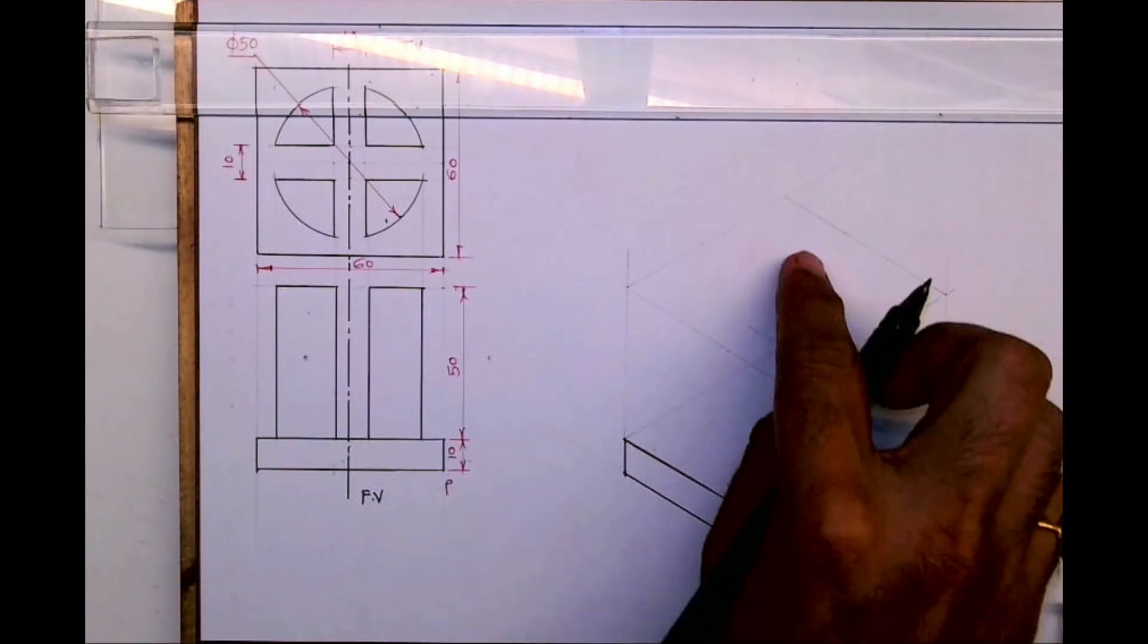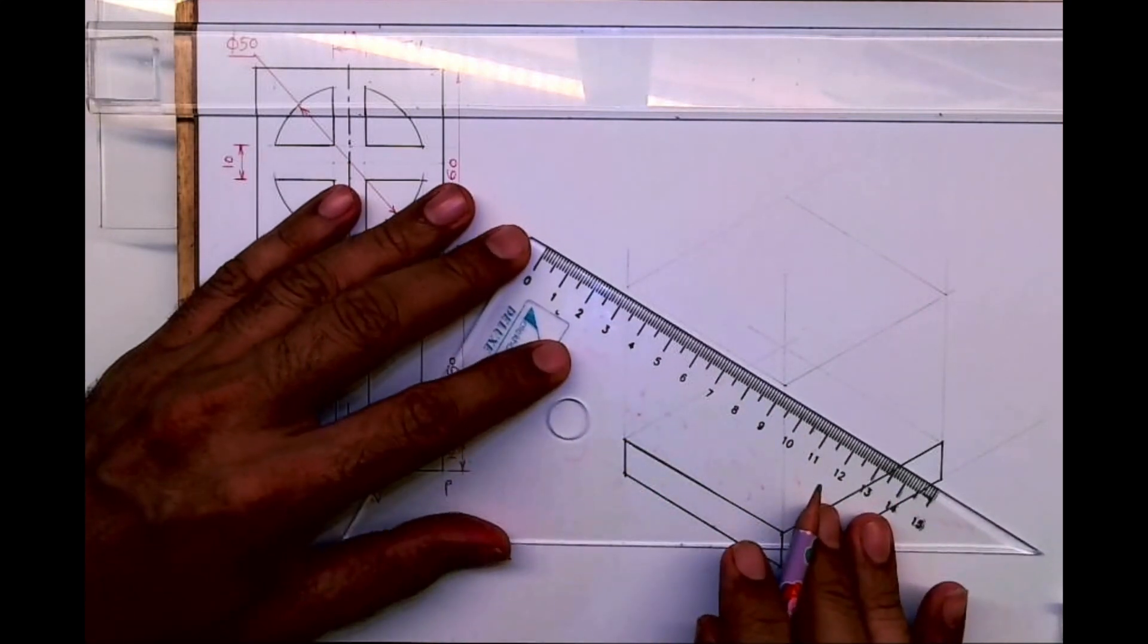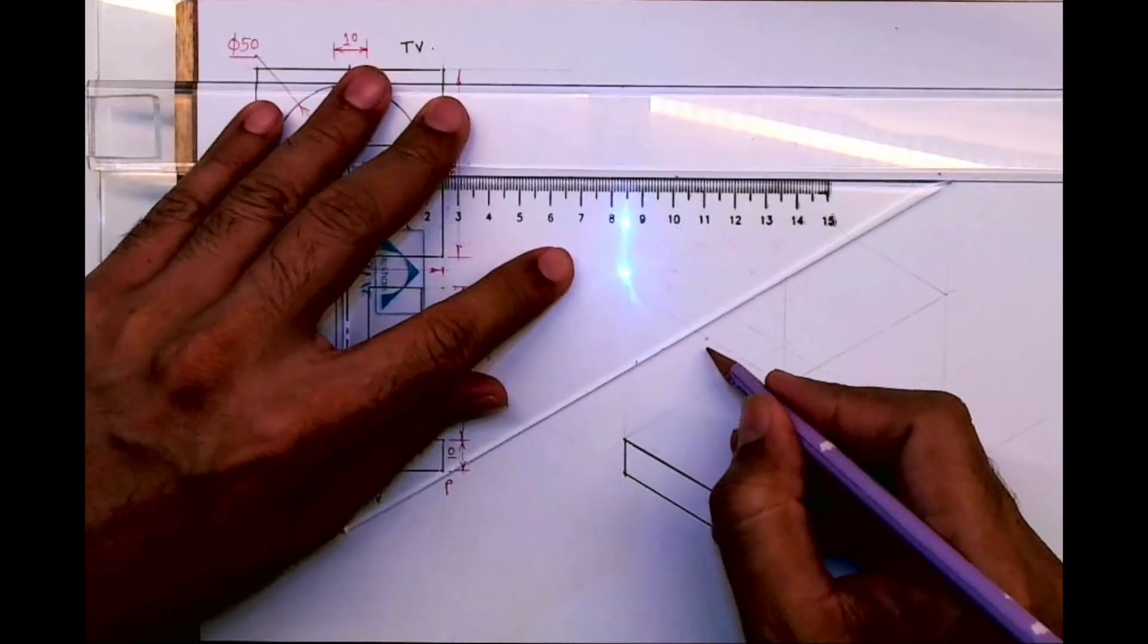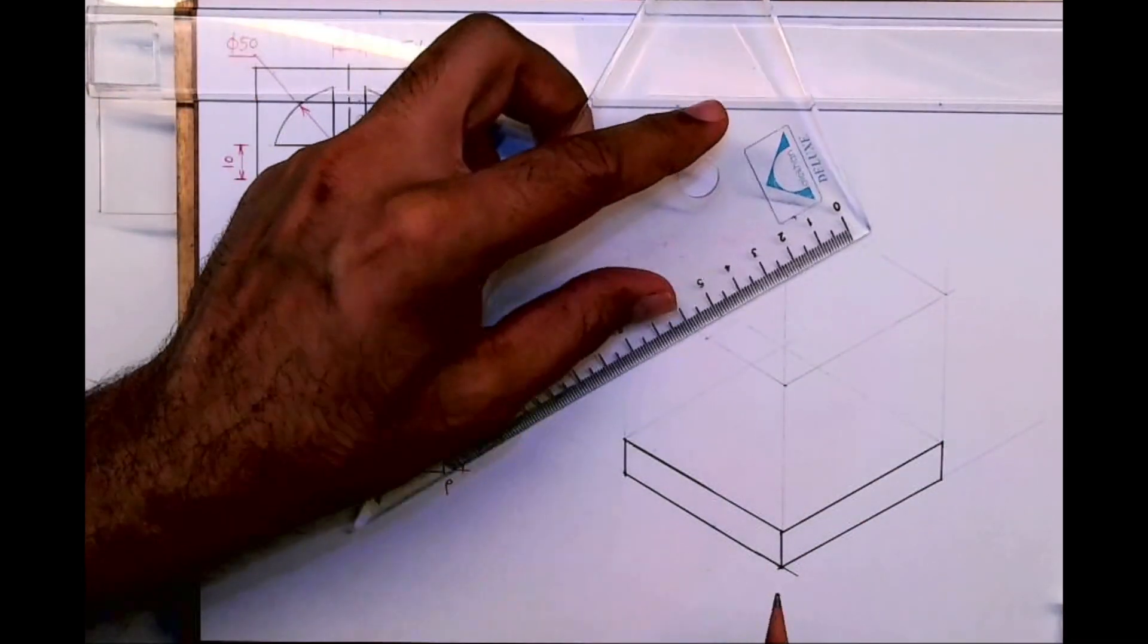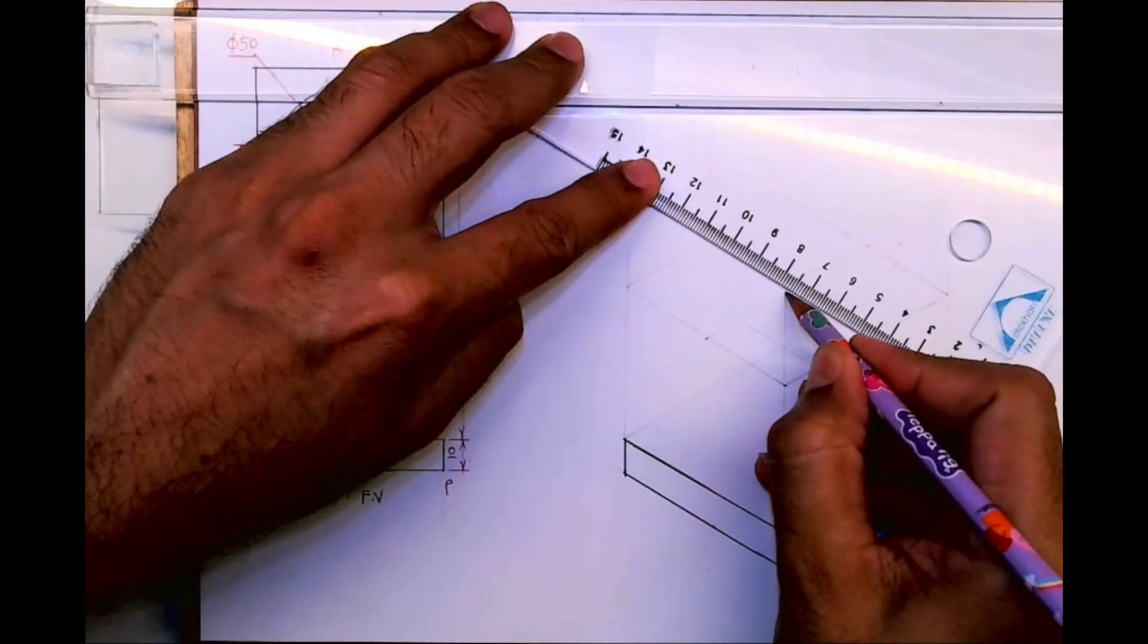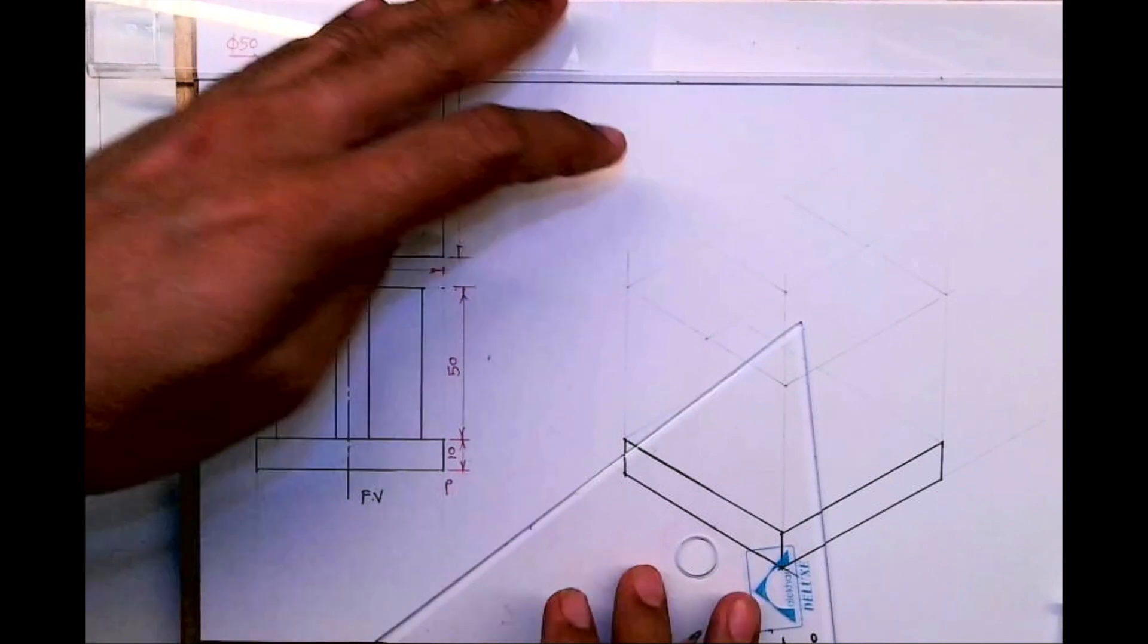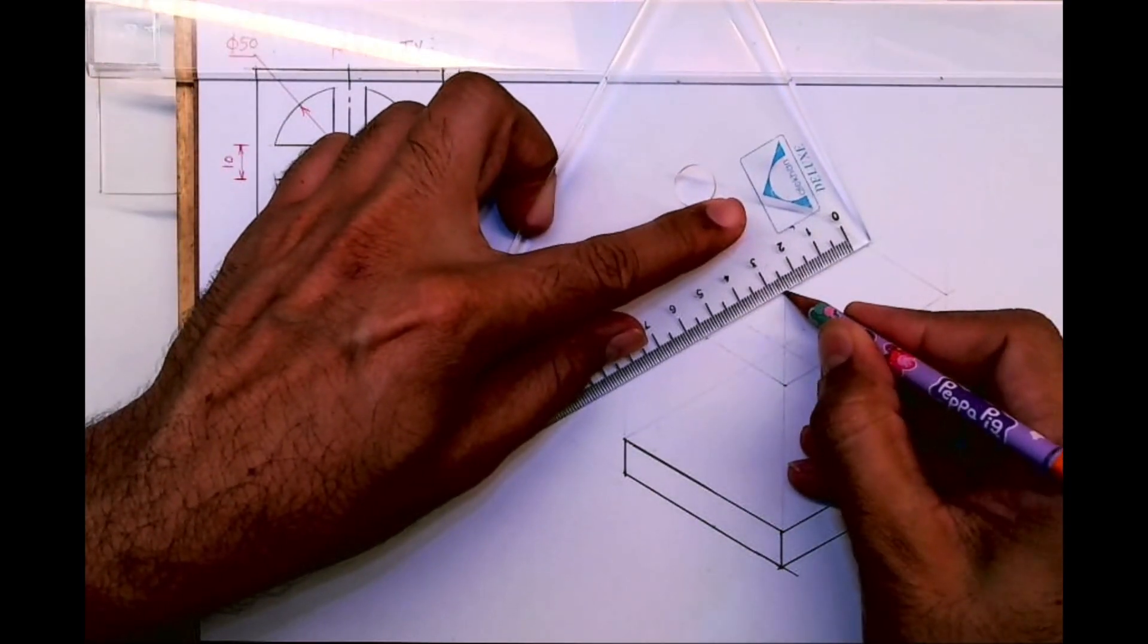So we are done with this much. Now we need to draw circle over here. The diameter is 50, so what we need to do first is find the center point, then we need to take 25 on both sides, all the sides. Find the center point like this - you mark 30, 30, you get the center point, and from there you mark 25, 25, 25, 25.